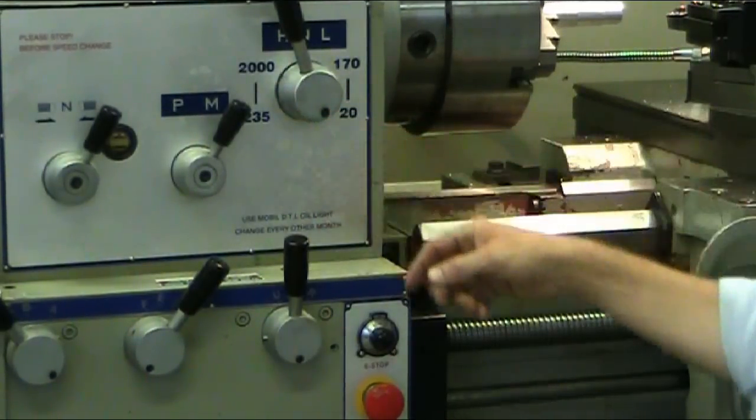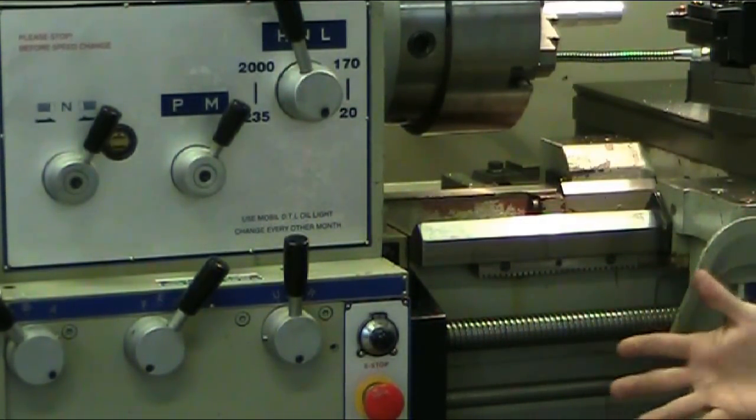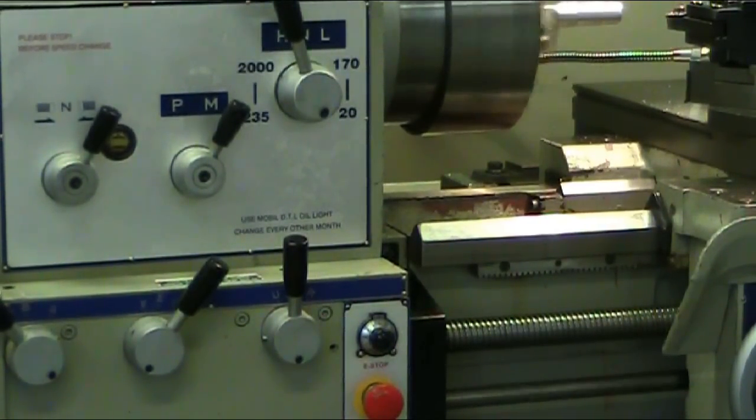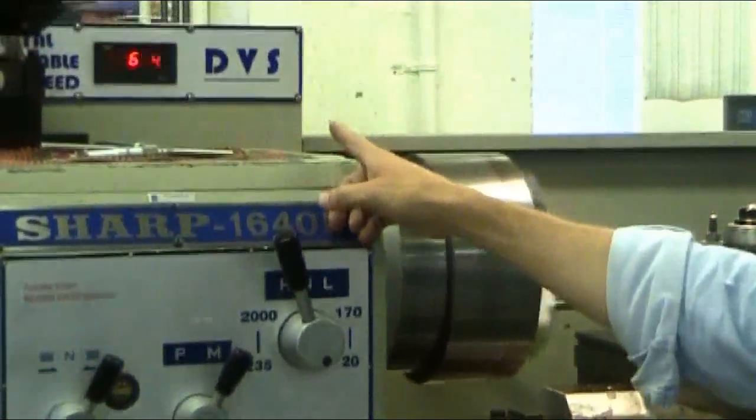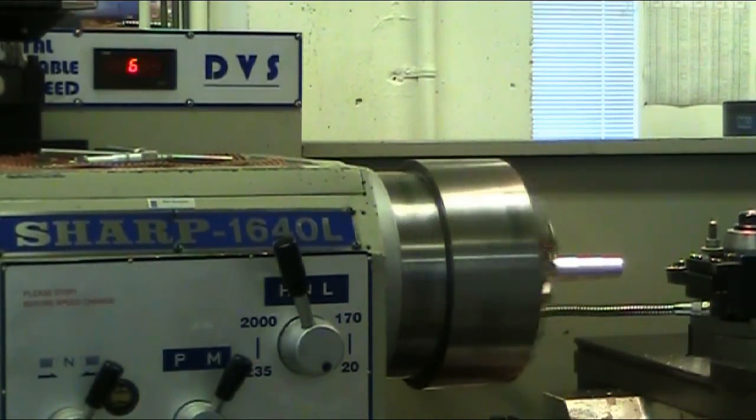Right now, it's set at 3, so it should be somewhere around 666 RPMs. So to turn it on, you flip the switch up and check out your RPM indicator. And it's running somewhere around 666 RPMs.